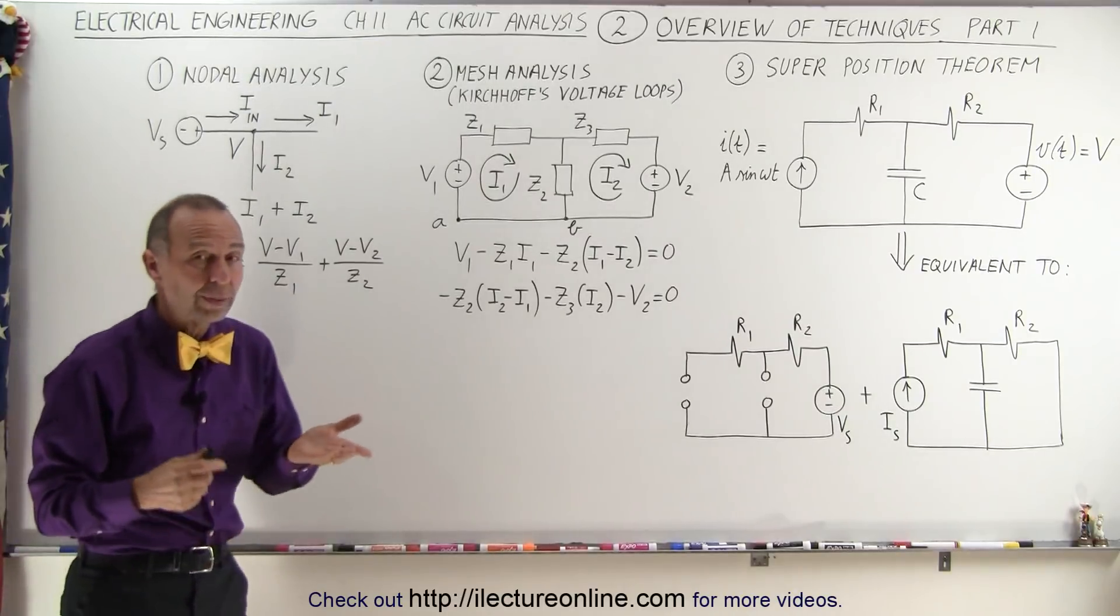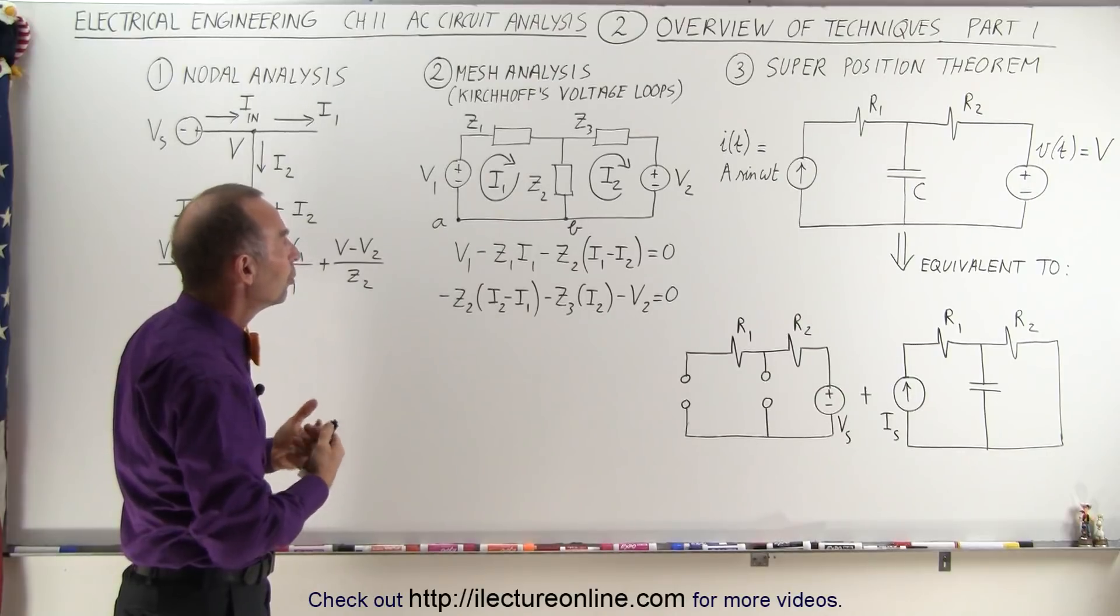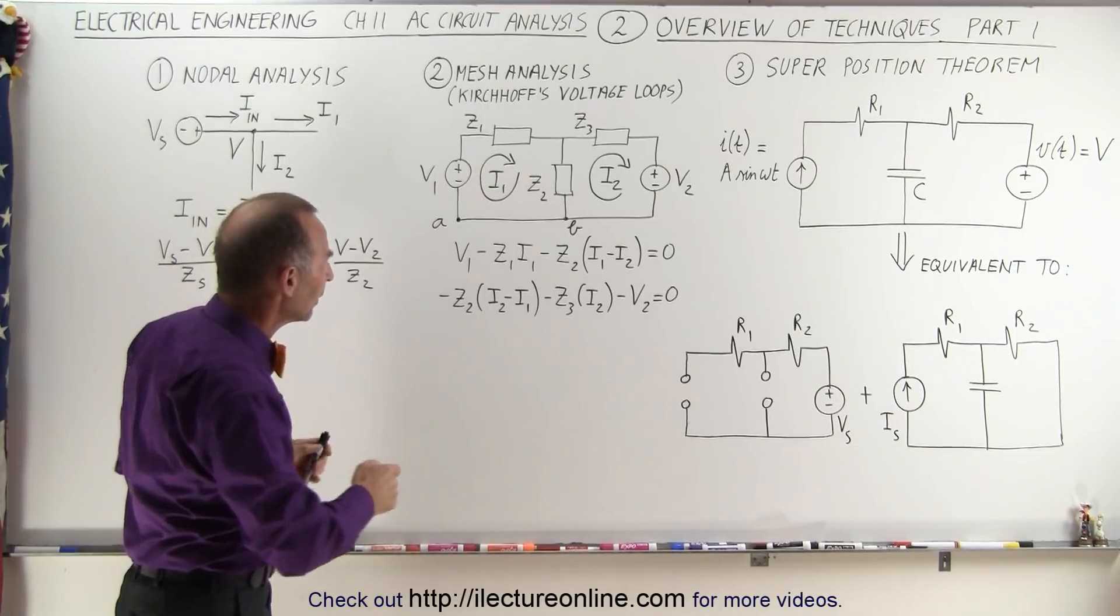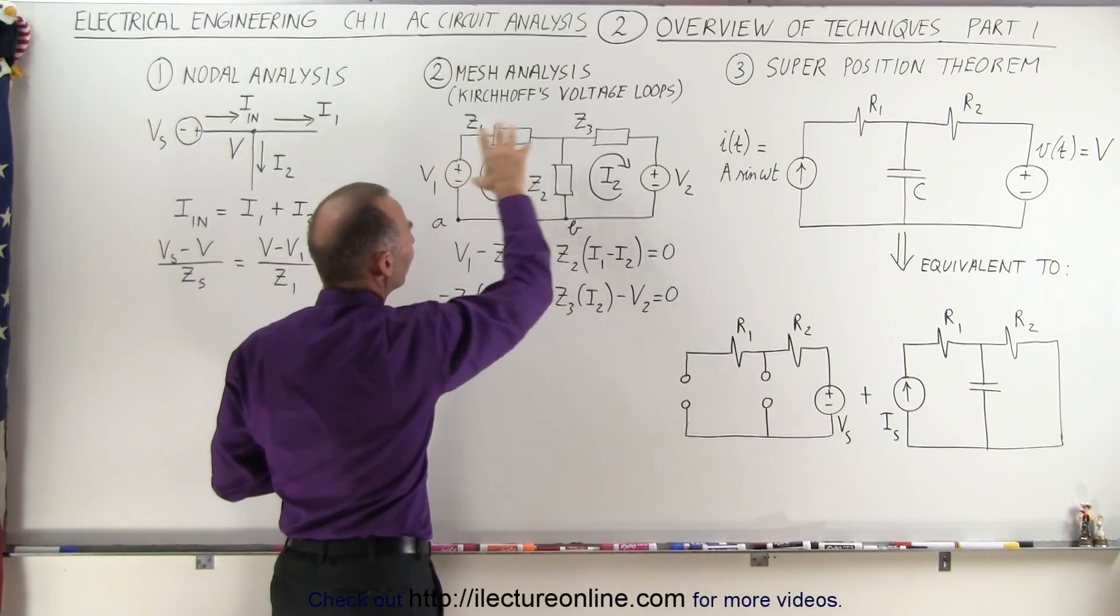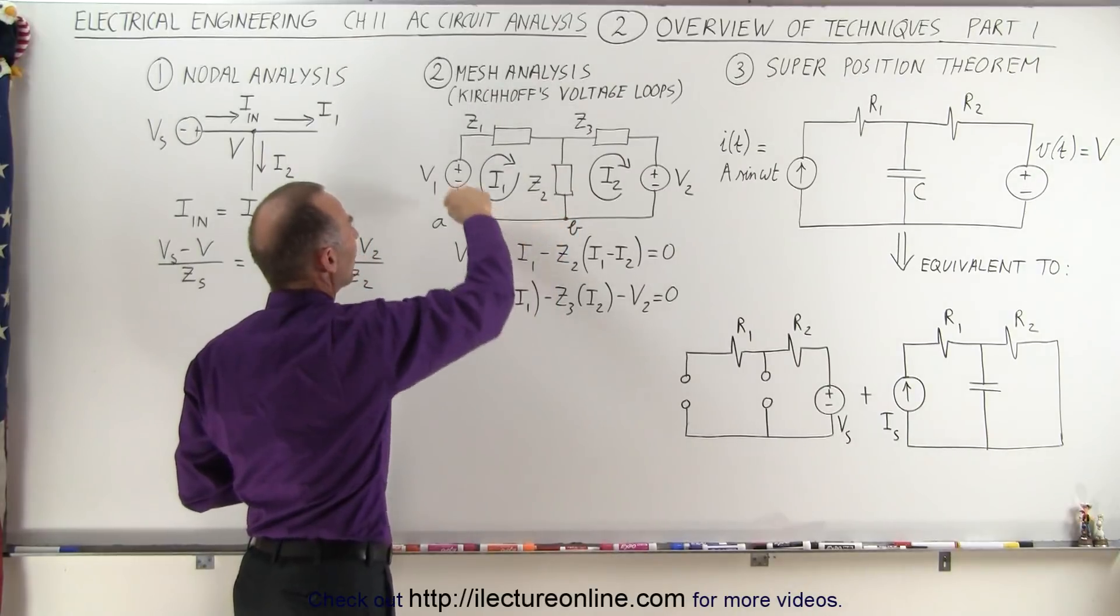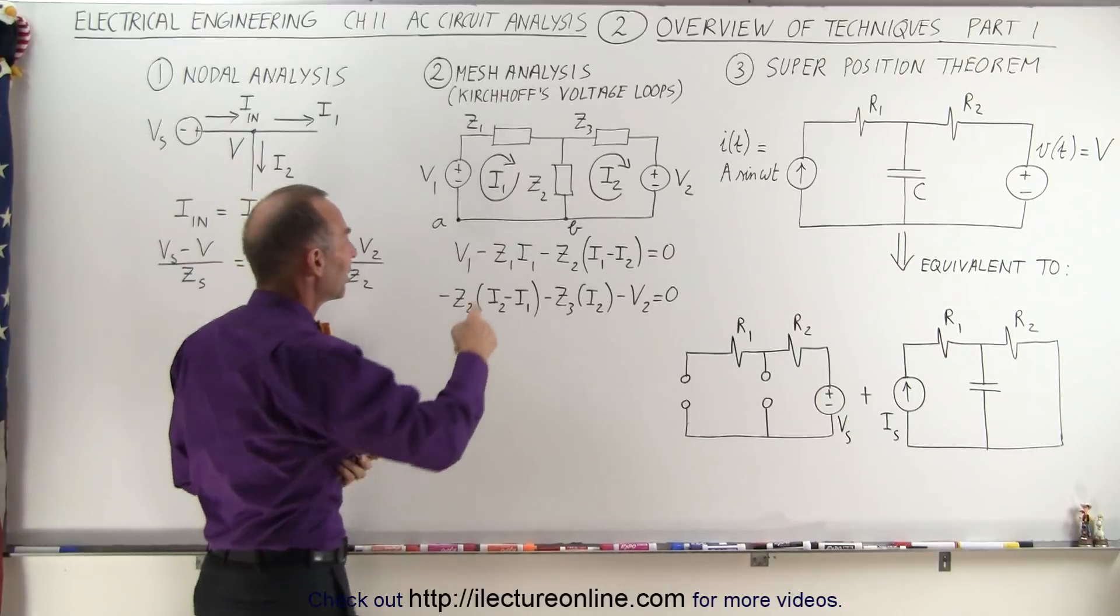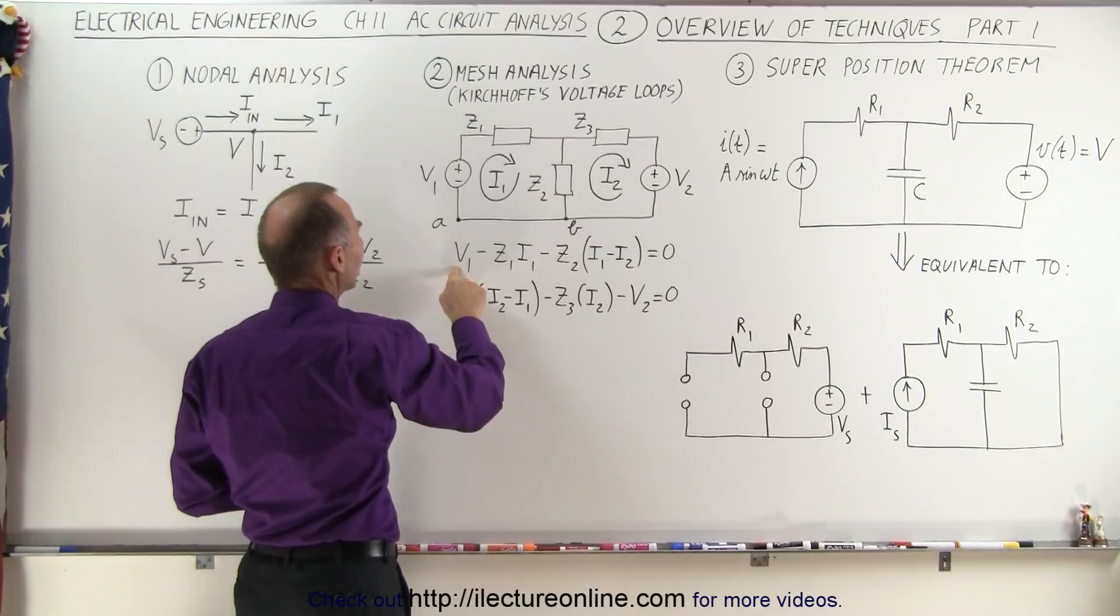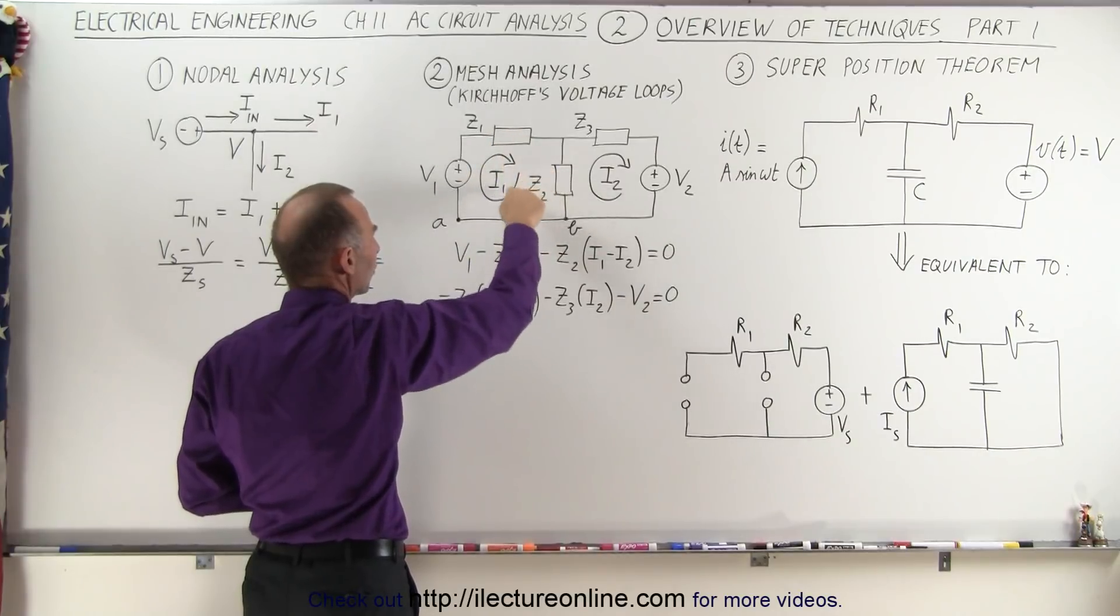The Mesh Analysis, which can also be called Kirchhoff's Voltage Loop methodology, is the voltage loop theory of Kirchhoff's Laws. What we do here is recognize there's going to be current in each mesh or loop. You identify the voltage sources, identify all the impedances in the circuit, and then you go around each mesh and add up all the voltage rises and drops. For example, we start at A, we go across the voltage source with a voltage rise of V1, then we have a voltage drop across this impedance minus Z1 times I1.